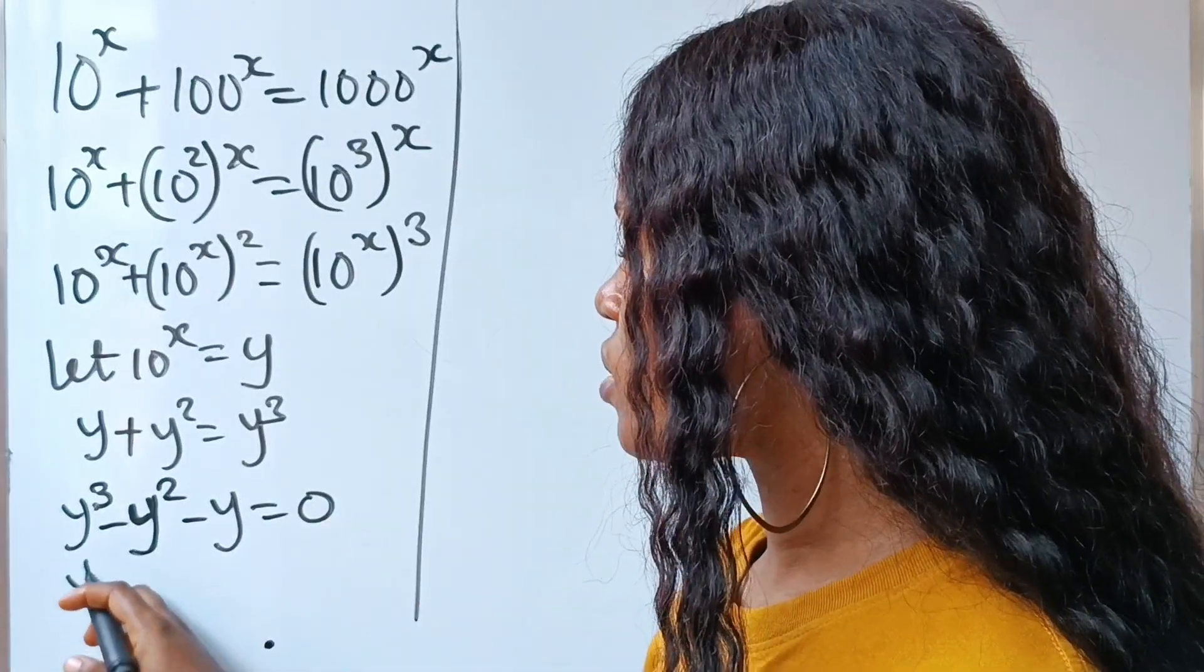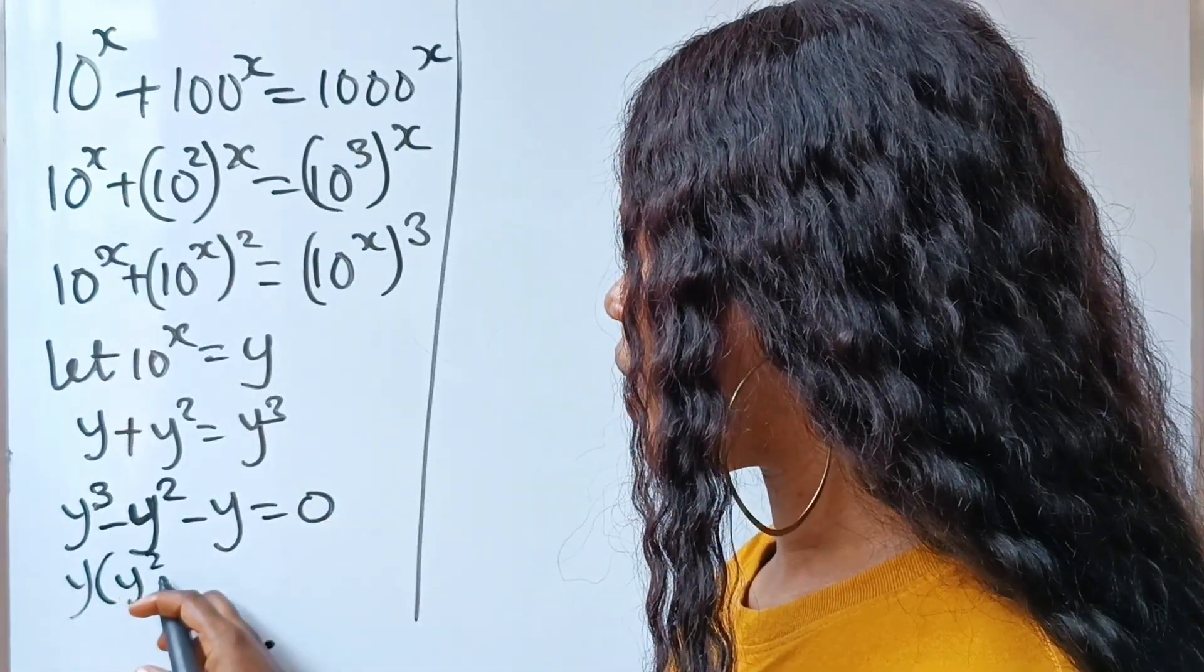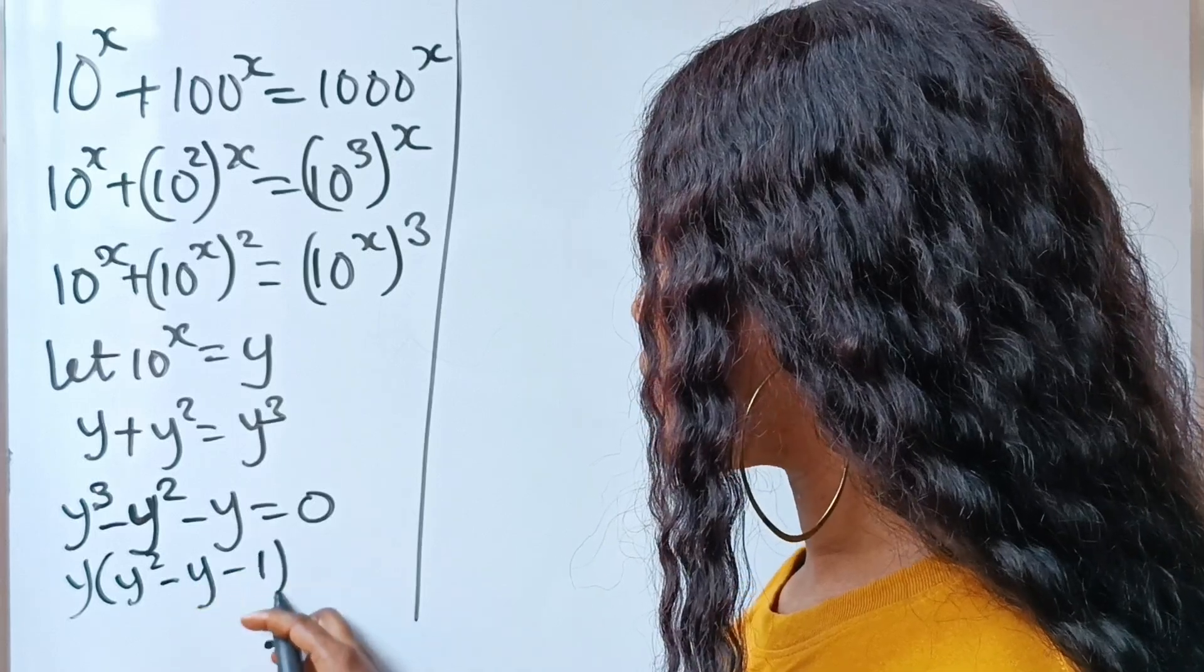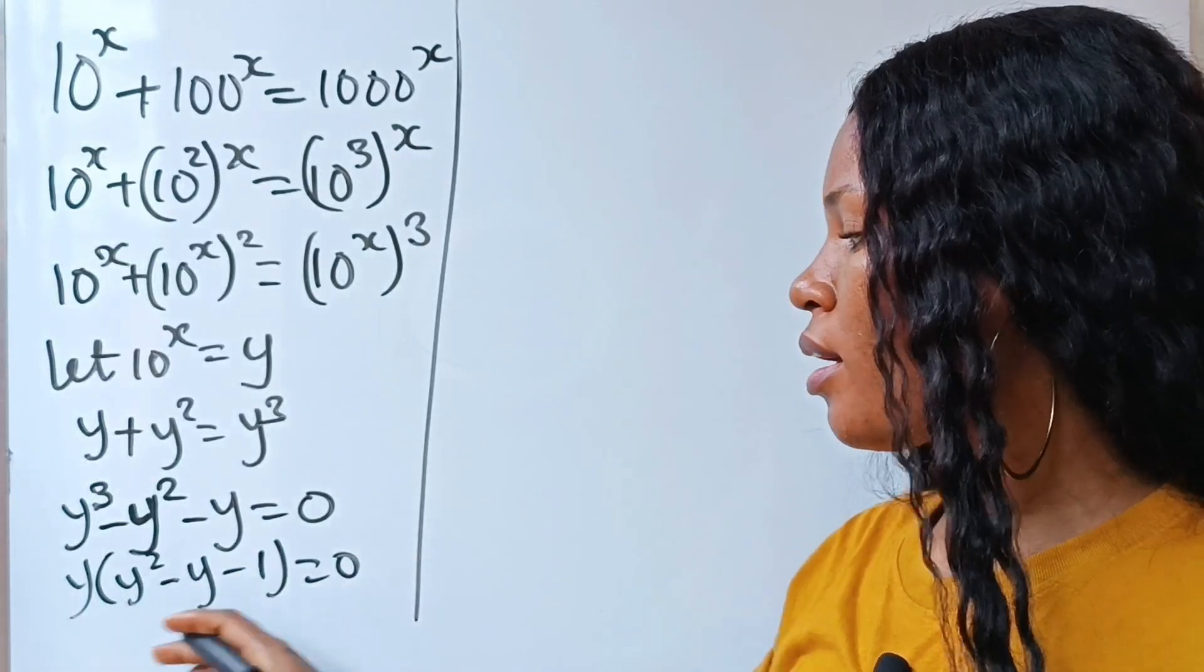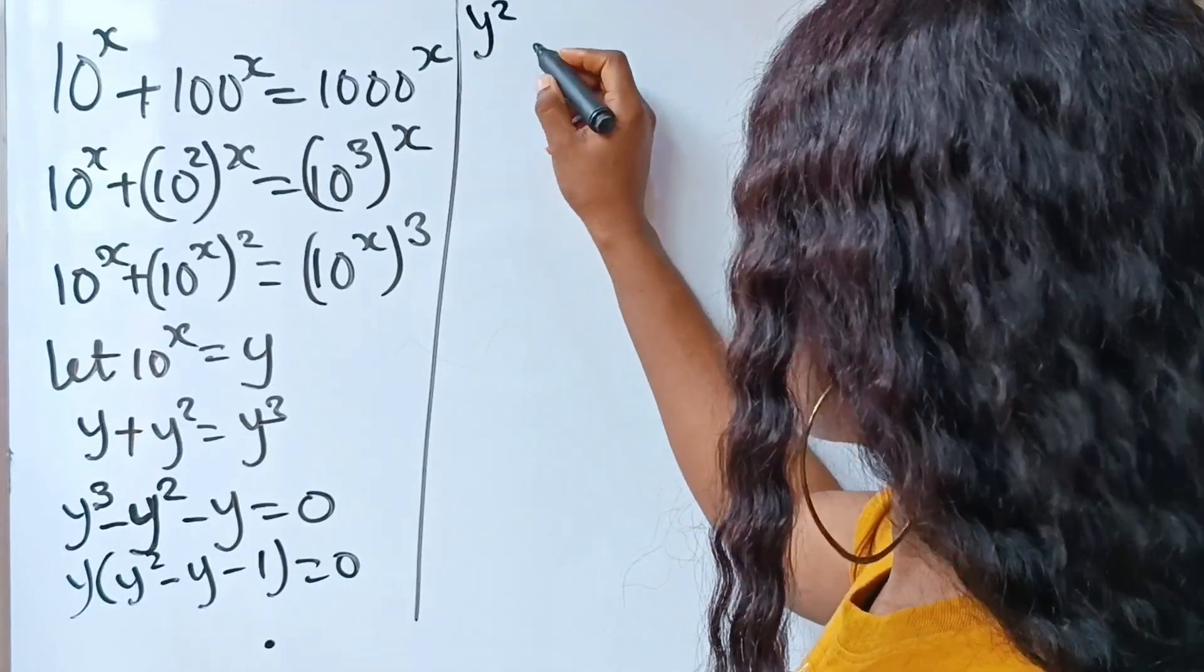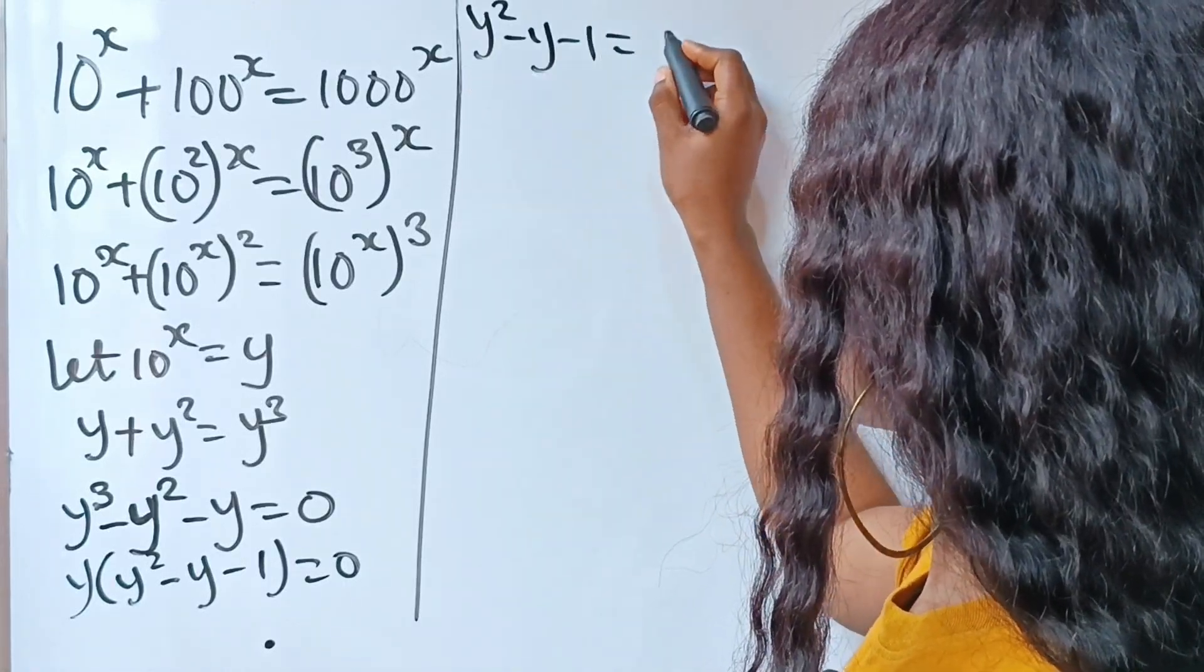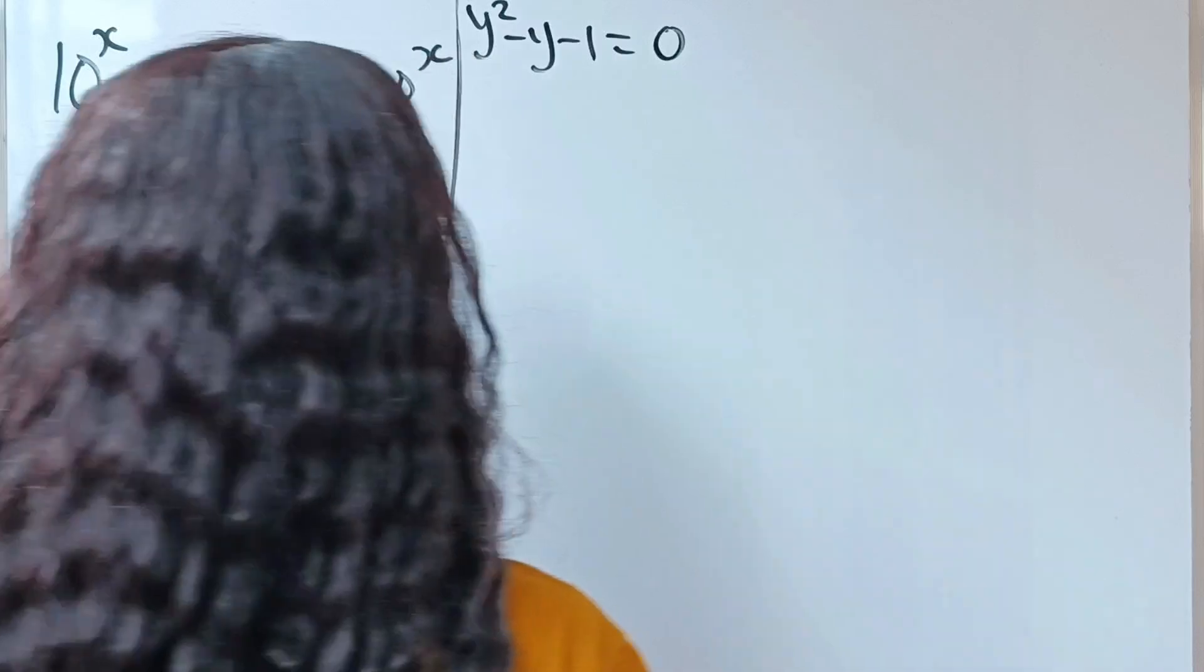So let's factorize y out. We have y squared minus y minus 1 is equal to 0. Now if we divide through by y, we are going to have that y squared minus y minus 1 is equal to 0.